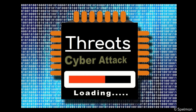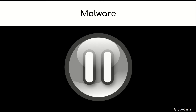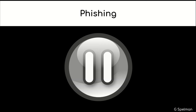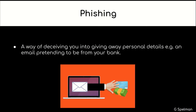So we're going to start on threats to the network. Malware: software that is programmed with the intention of causing harm. Phishing: a way of deceiving you into giving away personal details. Example: an email pretending to be from your bank.